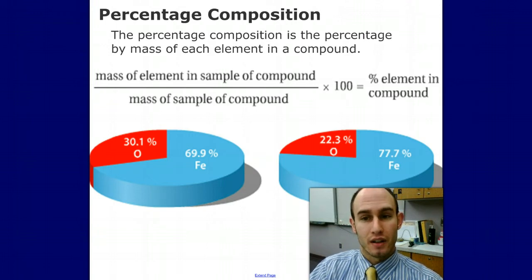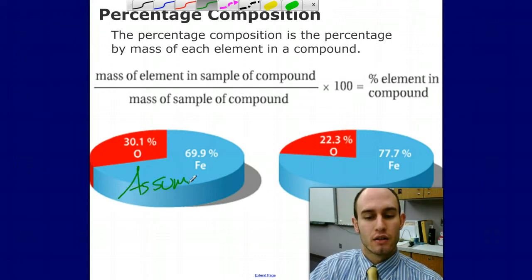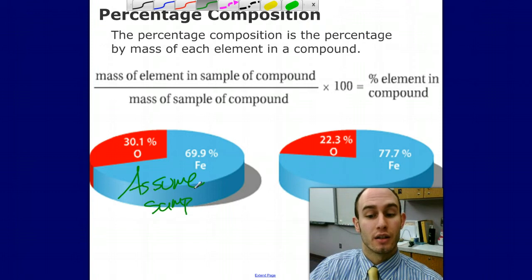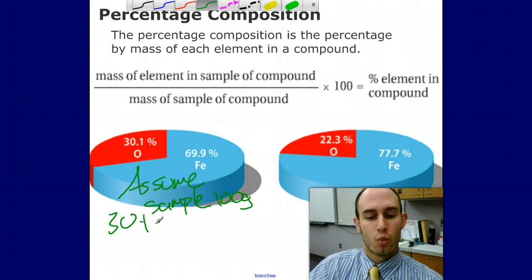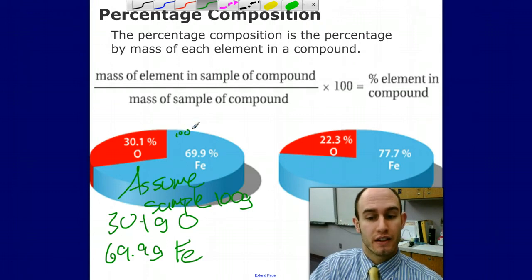Our example: we have 30.1% O and 69.9% iron. If you were given an example like this, you can always assume the sample is 100 grams. That makes it easy. So 100 grams means I have 30.1 grams of oxygen and 69.9 grams of iron. If you're ever given the percentages, it's really easy to assume the whole sample is 100 grams instead of just out of 100%. Then you get the masses.